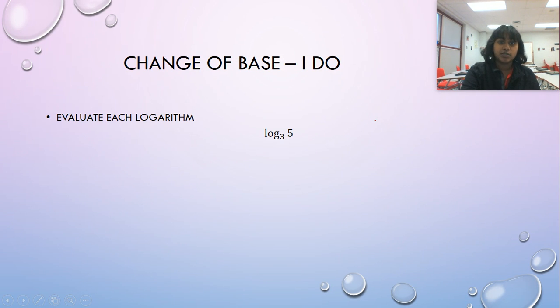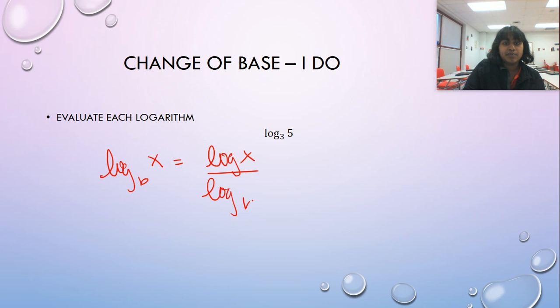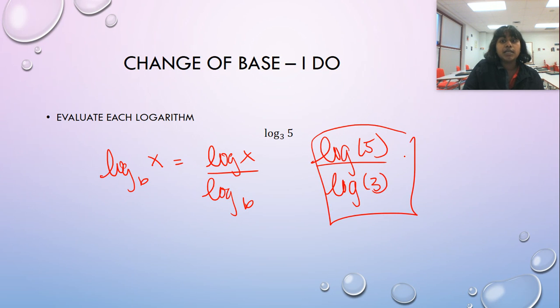And so, let's solve one of these questions. Very simply, this becomes, change of base tells me that log base B of A becomes log base X over log base B. So this becomes log of 5 divided by log of 3. It really is that simple.